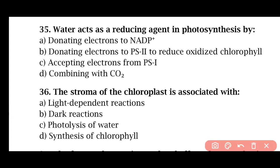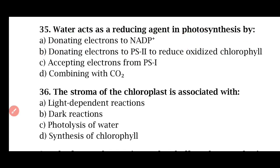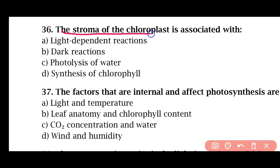Question 35: Water acts as a reducing agent in photosynthesis by — donating electrons to NADP+, donating electrons to photosystem 2 to reduce oxidized chlorophyll, accepting electrons from photosystem 1, or combining with carbon dioxide. The correct answer is option B. Water is a reducing agent because it donates its electrons to photosystem 2 to reduce the oxidized chlorophyll. Question 36: The stroma of the chloroplast is associated with — light-dependent reaction, dark reaction, photolysis of water, or synthesis of chlorophyll. The correct answer is option B. The dark reaction occurs in the stroma.